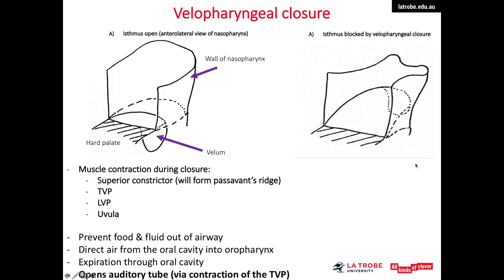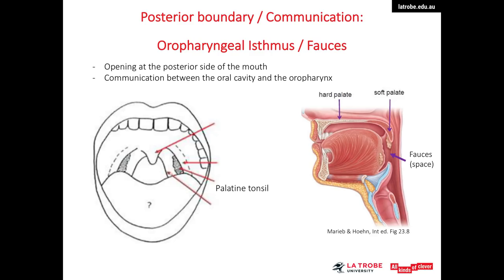The muscles involved in velopharyngeal closure are the superior constrictor of the pharynx, the tensor veli palatini, and the levator veli palatini, which elevate the velum, with the uvula also supporting elevation. The main function of velopharyngeal closure is to prevent foreign objects from entering the airway and to direct air in and out from the oral cavity into the oropharynx. Importantly, contraction of the tensor veli palatini also opens the auditory tube — the eustachian tube.